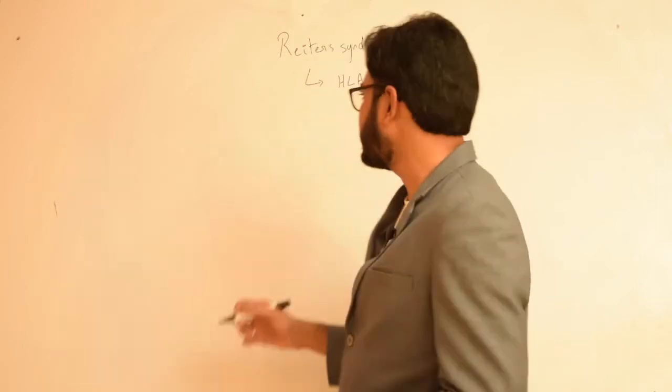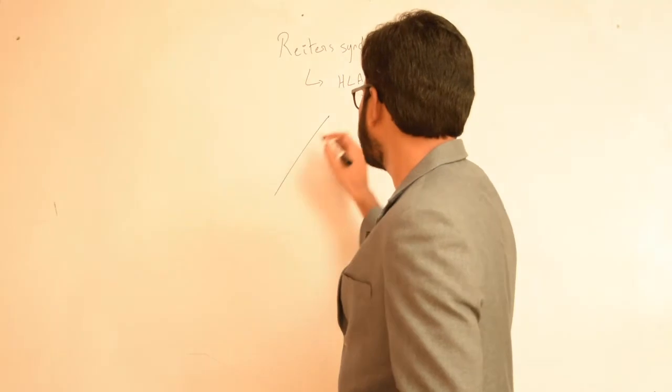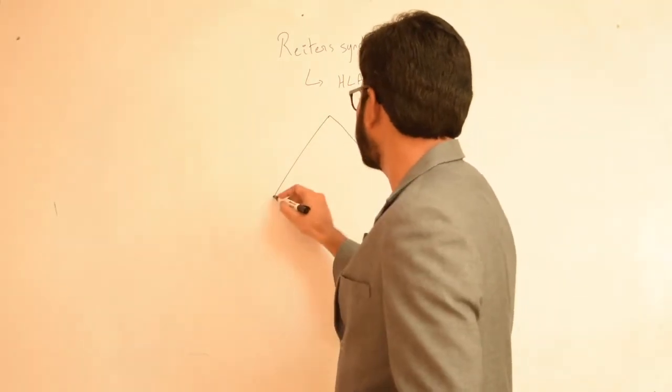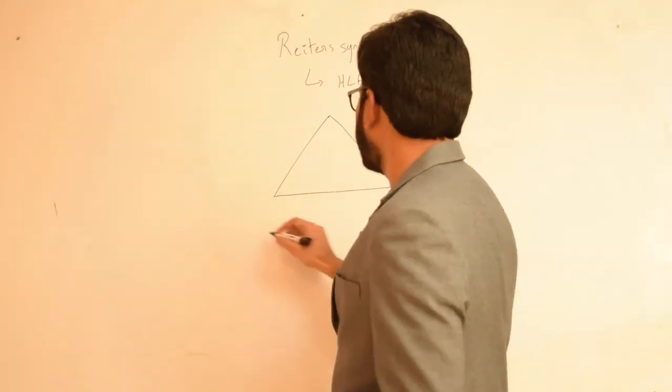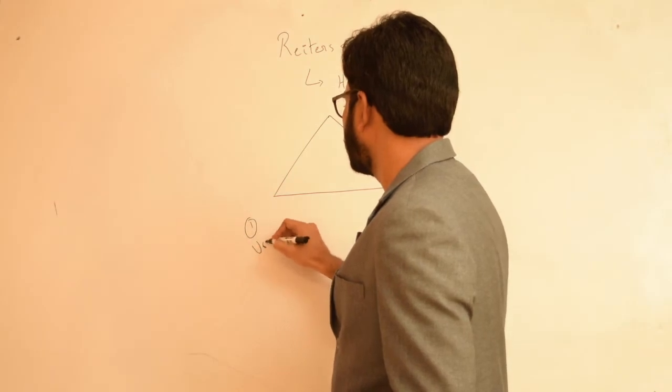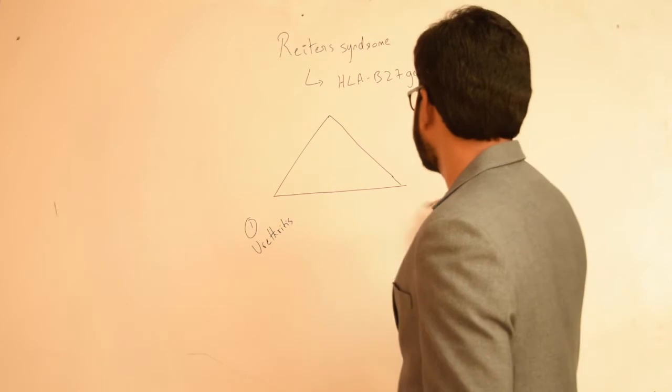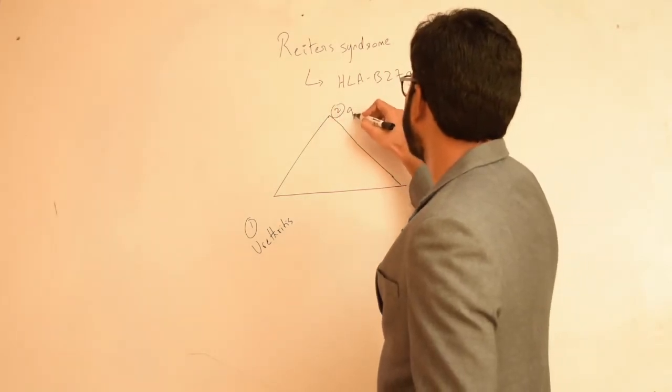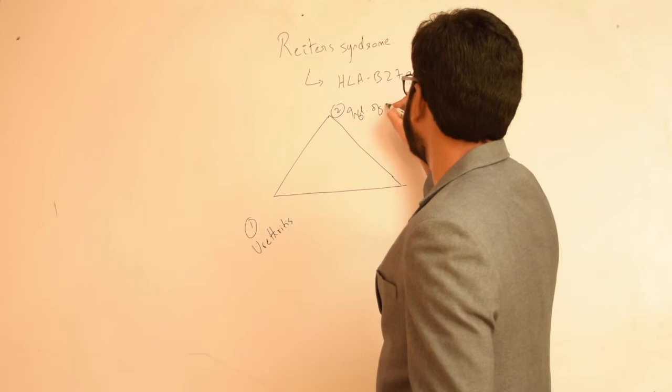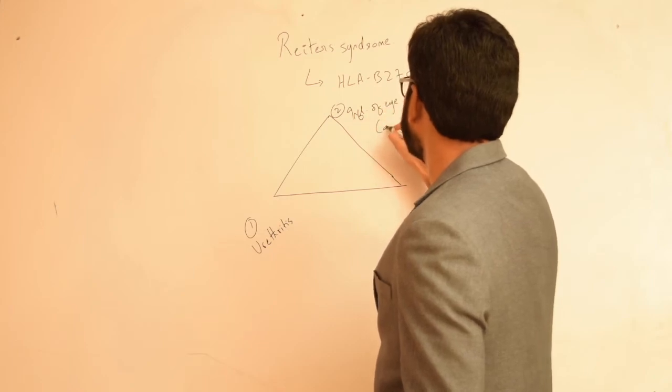And there is a characteristic clinical triad of symptoms and they include the following: first one is urethritis, the second one is inflammation of eye that is conjunctivitis and uveitis,